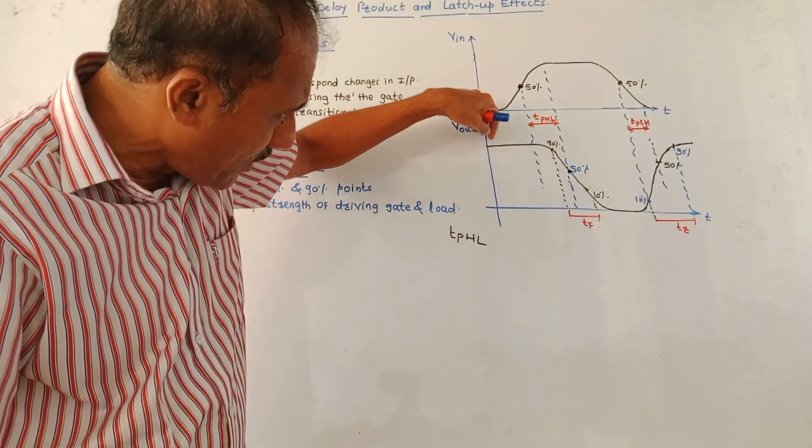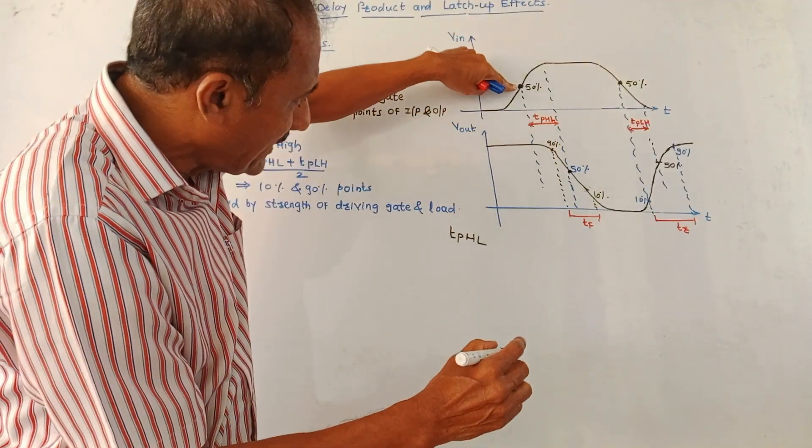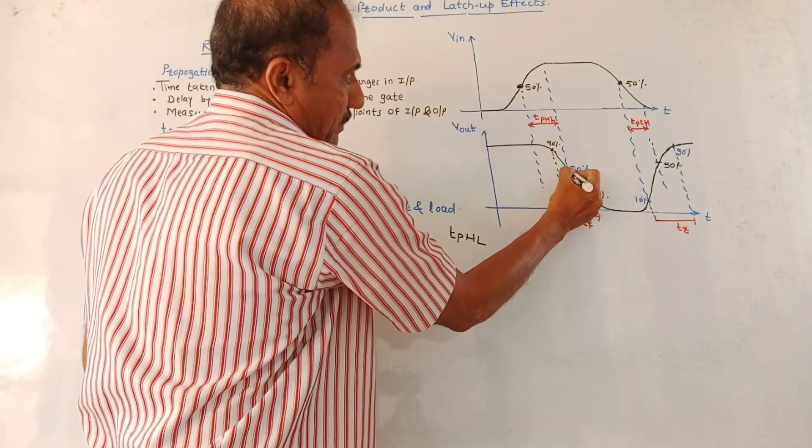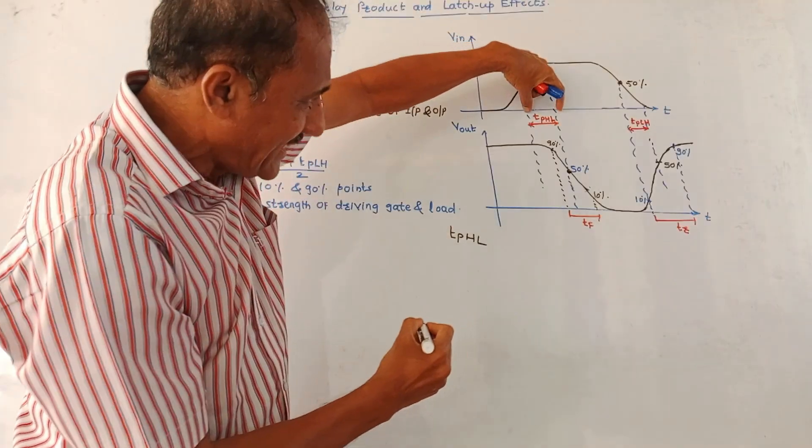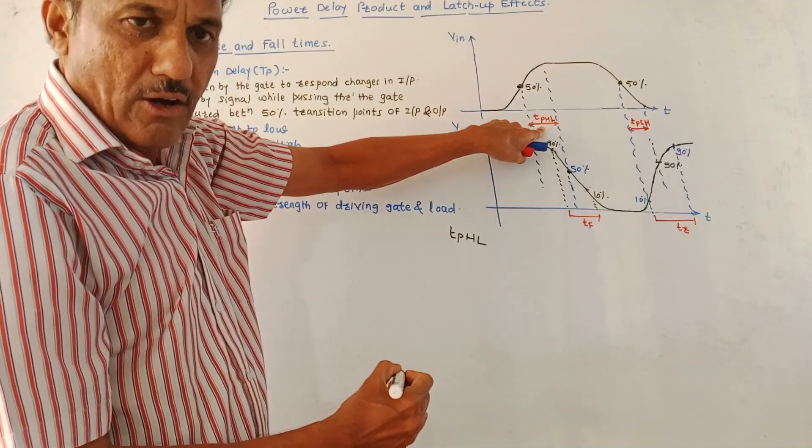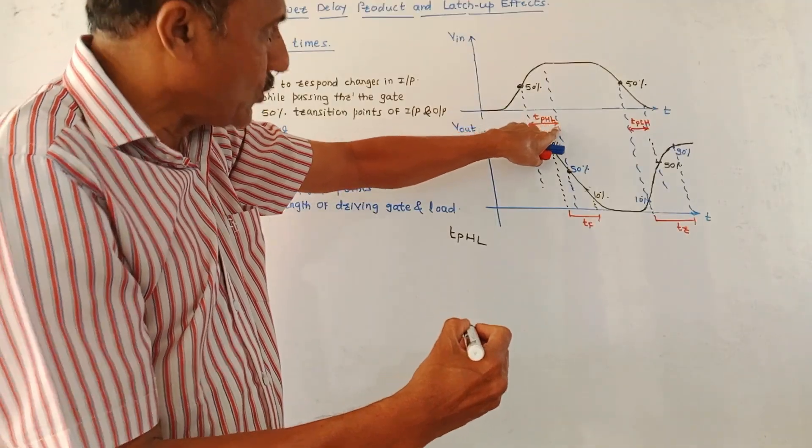Whenever the output is changing from high level to low level, then the difference between these two 50% points, 50% point of the input and 50% point of the output, this time difference is TPHL. That is propagation delay or transition time for high to low transition.